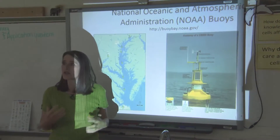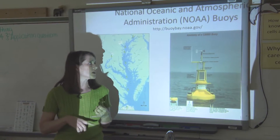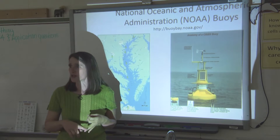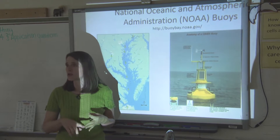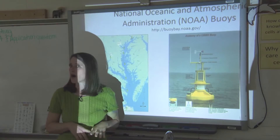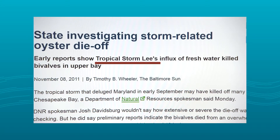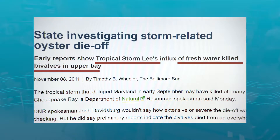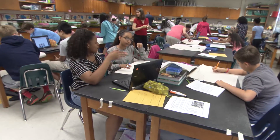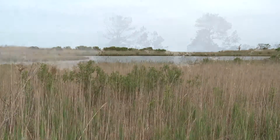She took us to the NOAA website to examine buoy data. They measure things like dissolved oxygen, water temperature, air temperature, and wind speed. We compared this information to the conditions oysters need and found a storm had hit the bay — too much fresh water had killed the oysters.